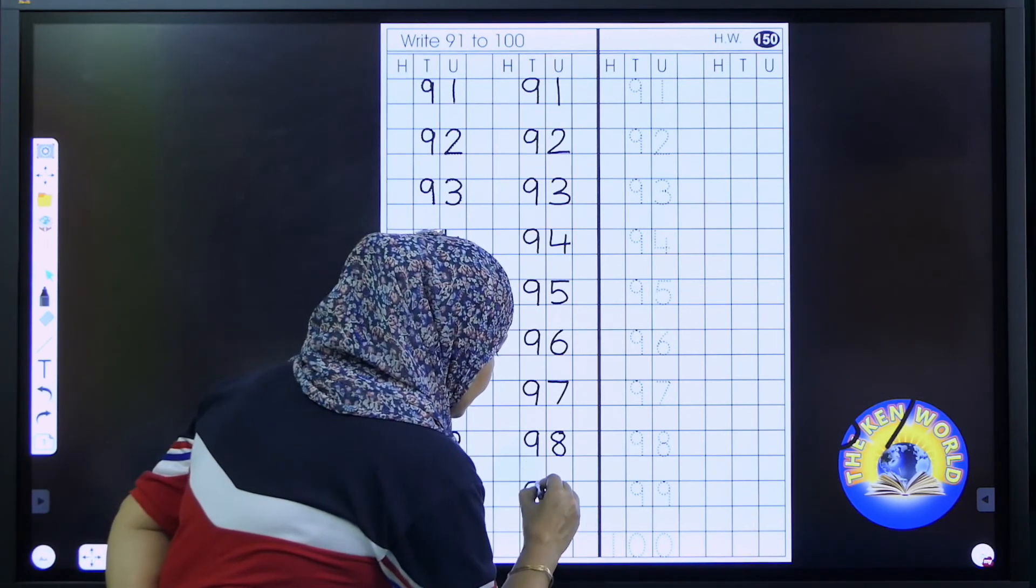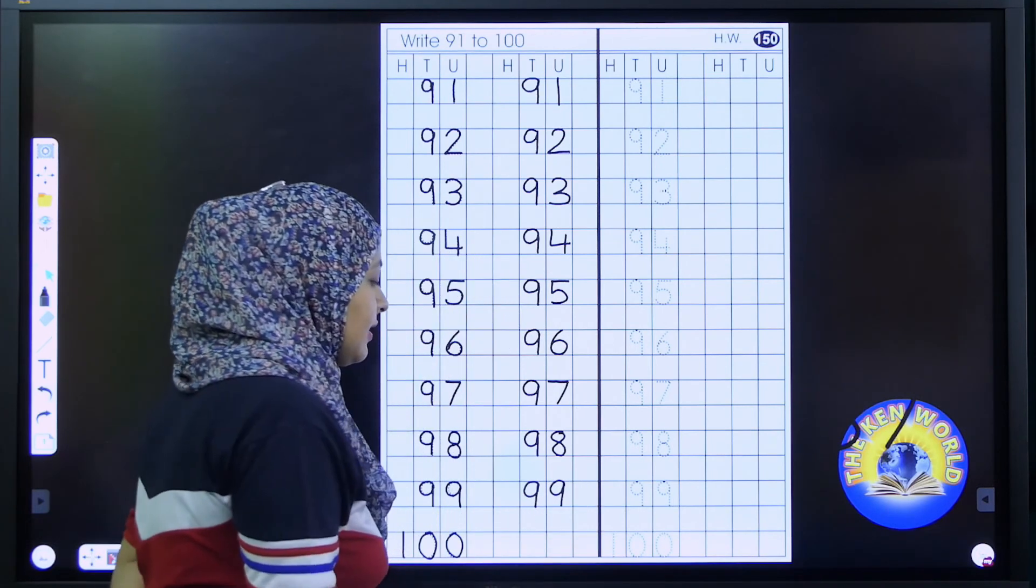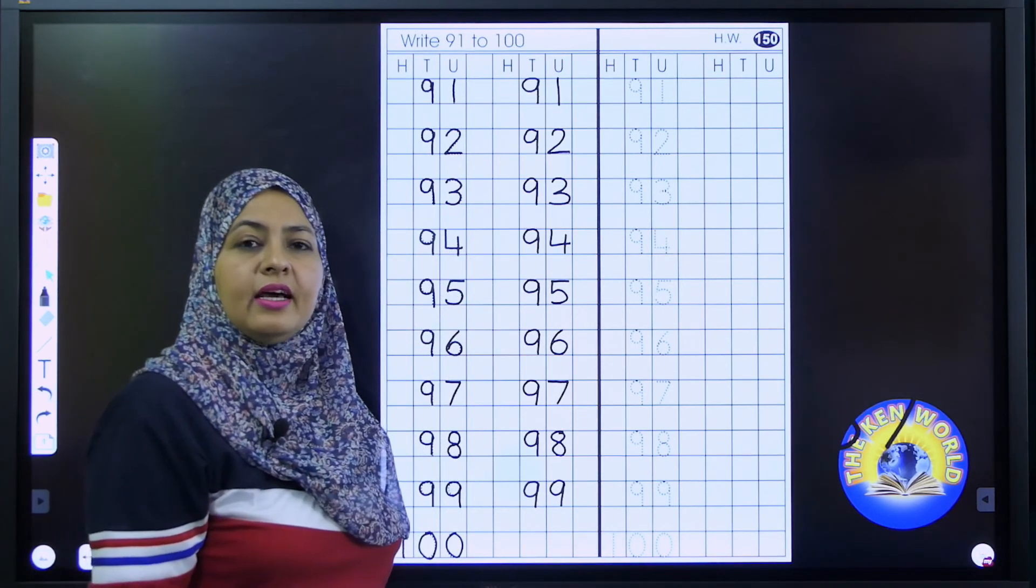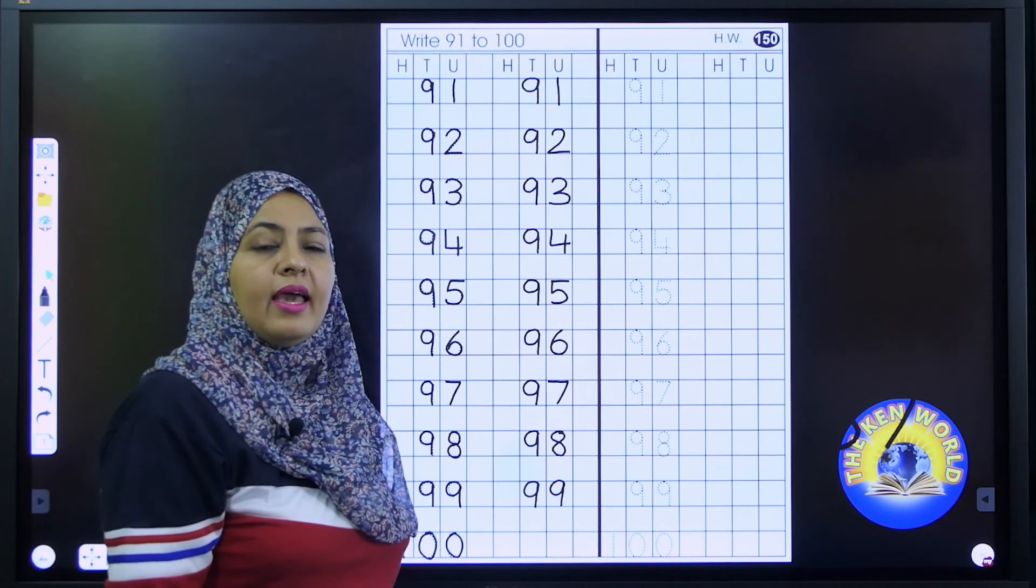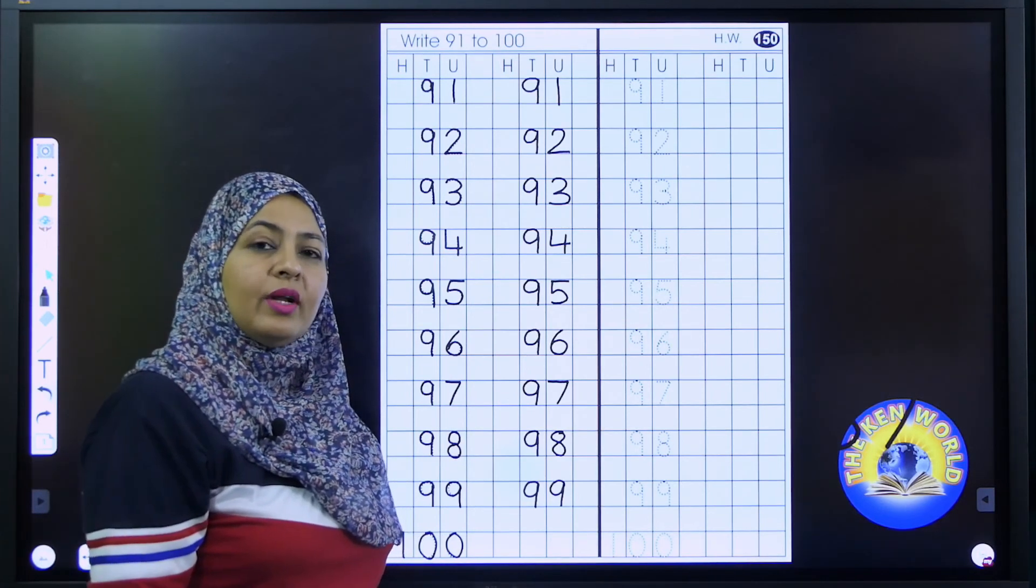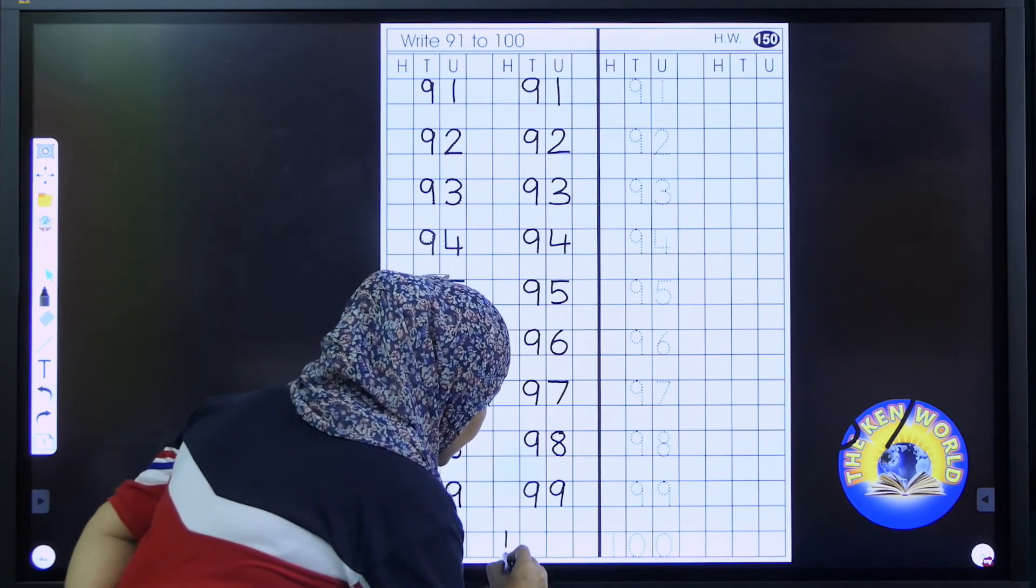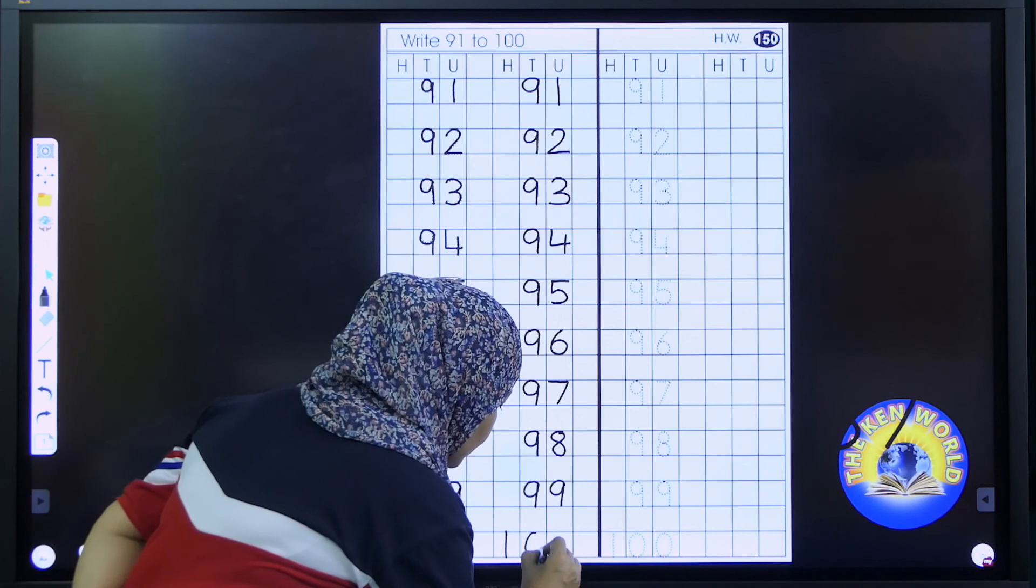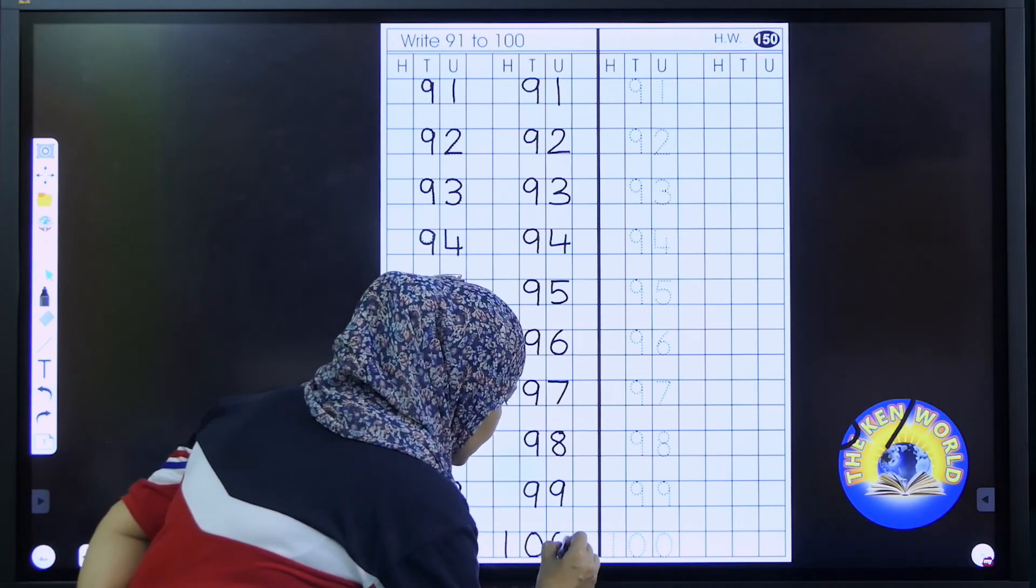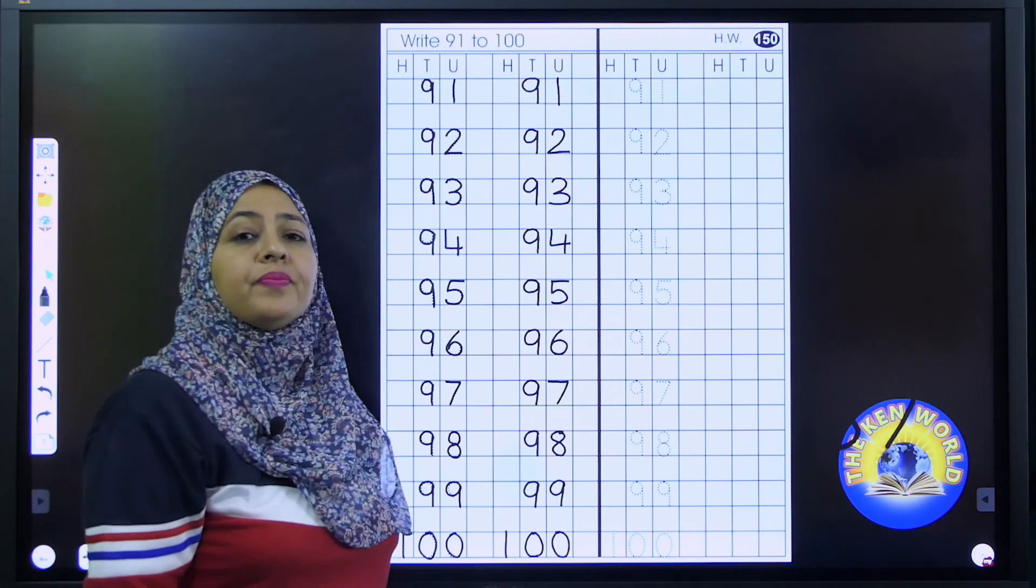99. 99. 99. What comes after 99? Excellent. Number 100. So write number 100. Write 1 over here. 0 and 0. 1, 0, 0, 100.